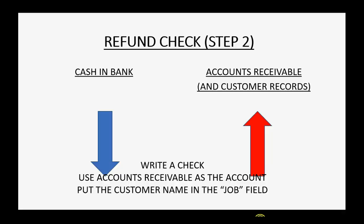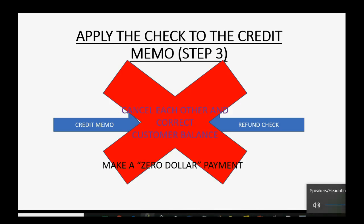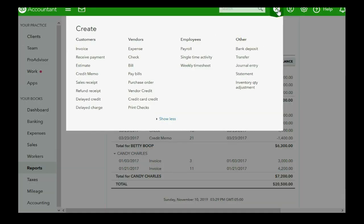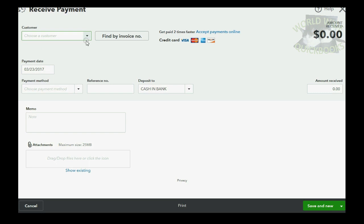The check increased the customer's balance and the credit memo decreased the customer's balance, and now we're ready for step three. In step three, we're going to apply the check to the credit memo and have the two of them cancel each other out — that means we make a $0 payment. We use the same date used for both the check and the credit memo. We click the plus sign and click receive payment, because as we learned in the previous video, that's the window to use.